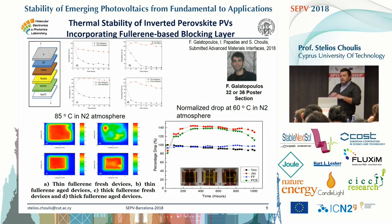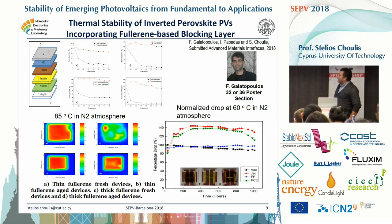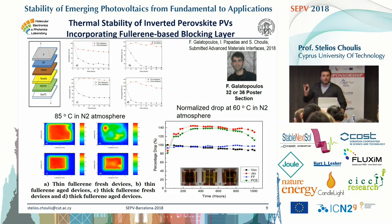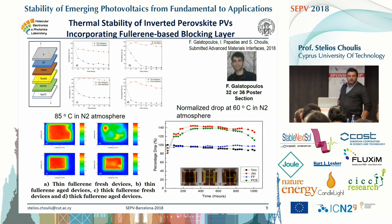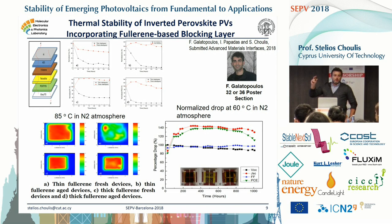We saw this with reverse engineering: if you take the degraded device out and re-evaporate the aluminum, you can get the device stabilized — so we knew the problem was in the top electrode. Then Fedoros made devices at 85°C in a nitrogen atmosphere with thick fullerene and thin fullerene. The device with thin fullerene degrades very fast, whereas the device with thick fullerene remains stable. In photocurrent mapping, the thick fullerene device has the capability to block — we don't know if it's diffusion or chemical interaction — but the lifetime is greatly improved. At 60°C, we have stable performance after 1,000 hours of operation.